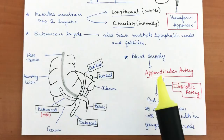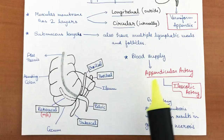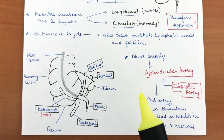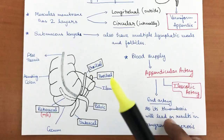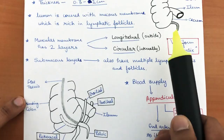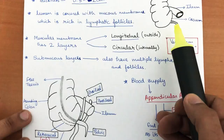The blood supply of the appendix comes from the appendicular artery, which is a branch of the ileocolic artery. It is an end artery, meaning that if any thrombosis or occlusion happens in this artery it will result in gangrene or necrosis, as it is not connected to any other artery. The vermiform appendix is a vestigial organ, just floating and attached to the cecum, and the appendicular artery supplies blood to it from that attachment point.